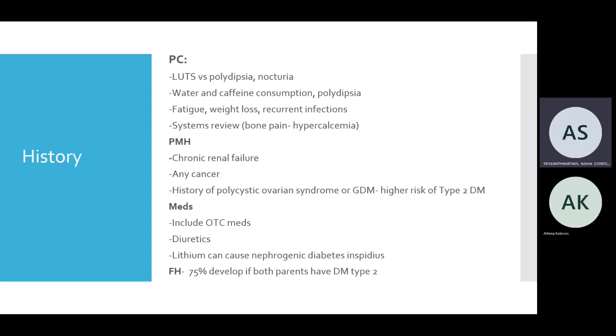Check their past medical history — chronic renal failure, any cancers especially endocrine cancers. More specific to females: polycystic ovarian syndrome, and gestational diabetes also increases the risk of developing type 2 diabetes. In terms of medication, check if they're on steroids or any other medications which can affect blood sugar control, including diuretics. Lithium can cause nephrogenic diabetes insipidus, so think about psych patients too. Family history is key — if both parents have type 2 diabetes, about 75% of offspring tend to develop it.